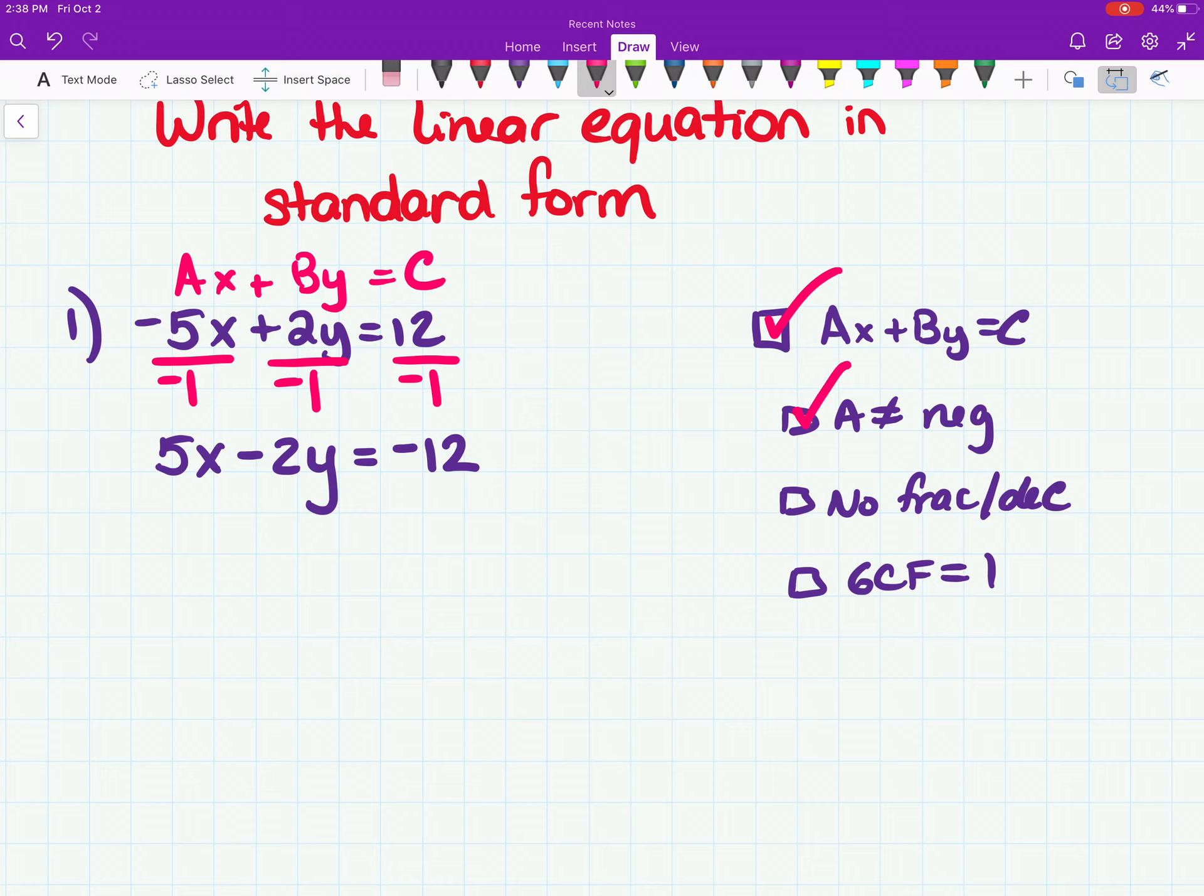Check. Are there any fractions or decimals? Nope. Check that off. And is the GCF 1? Well, 5, 2, and 12. Is there any number, one number, that goes into 5, 2, and 12 without creating a fraction besides 1? Well, at first glance, I thought 2 would work, because I could divide 2 into 2 and 2 into 12, but then 2 doesn't go into 5 without creating a fraction. So the only other number here is 1. Therefore, we can check that box. We are done with this problem. Once all the boxes are checked, put a box around your final answer.